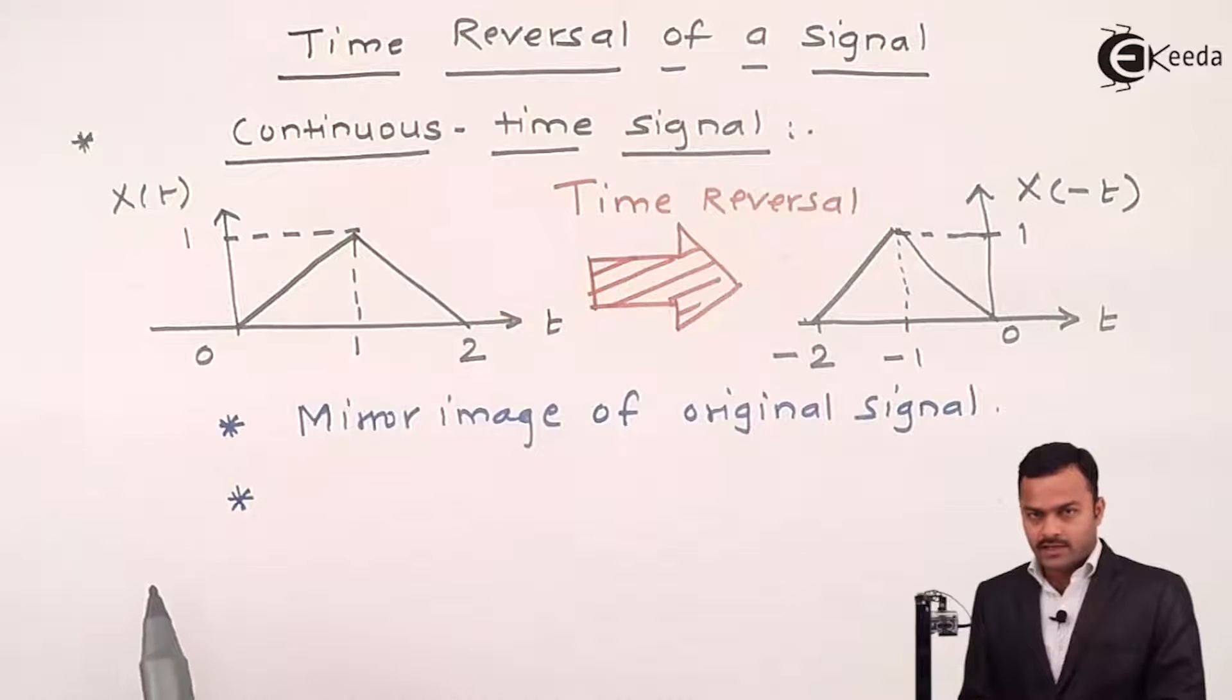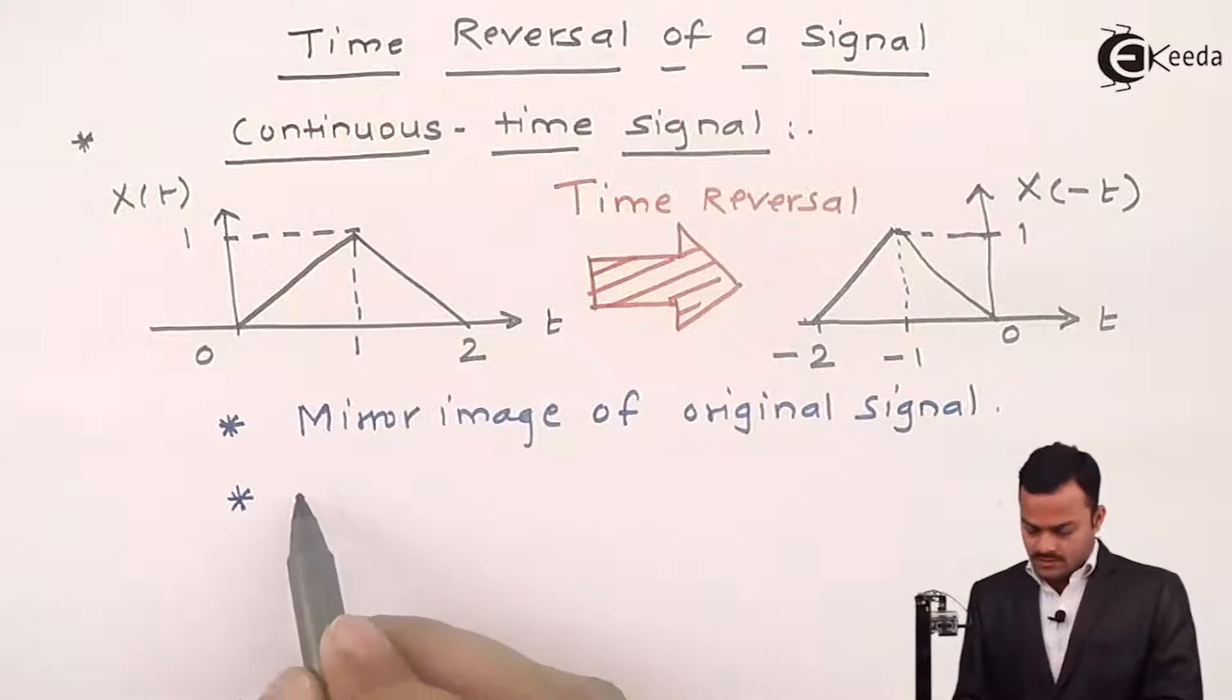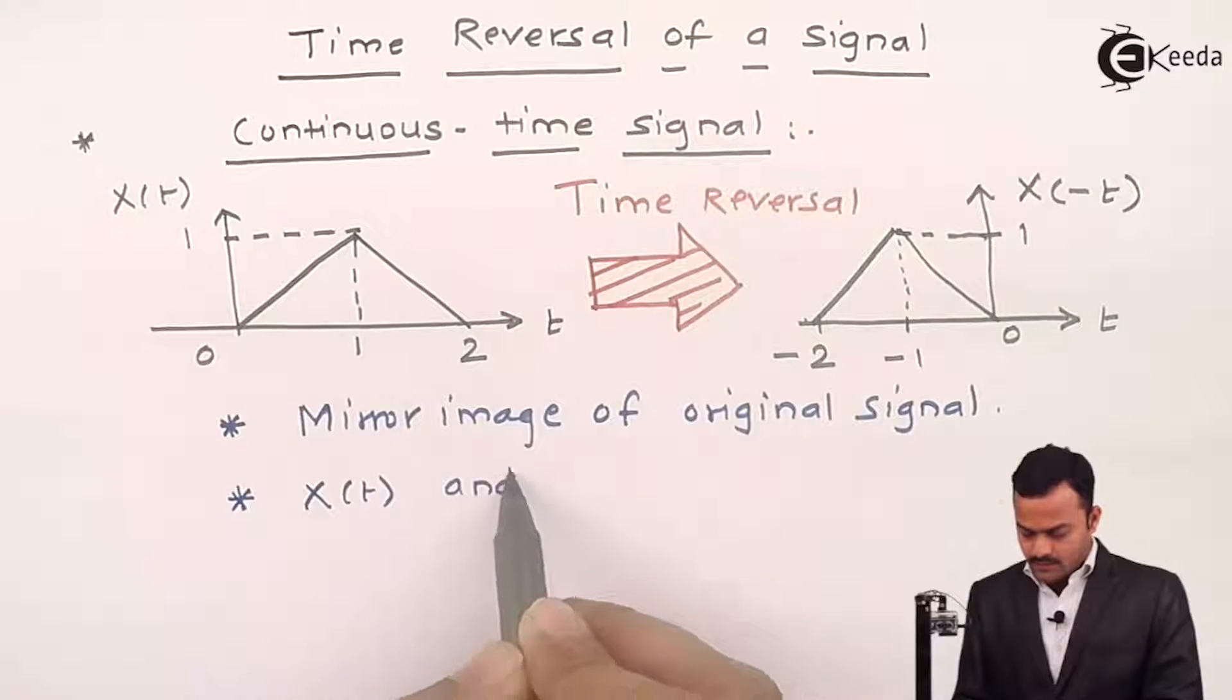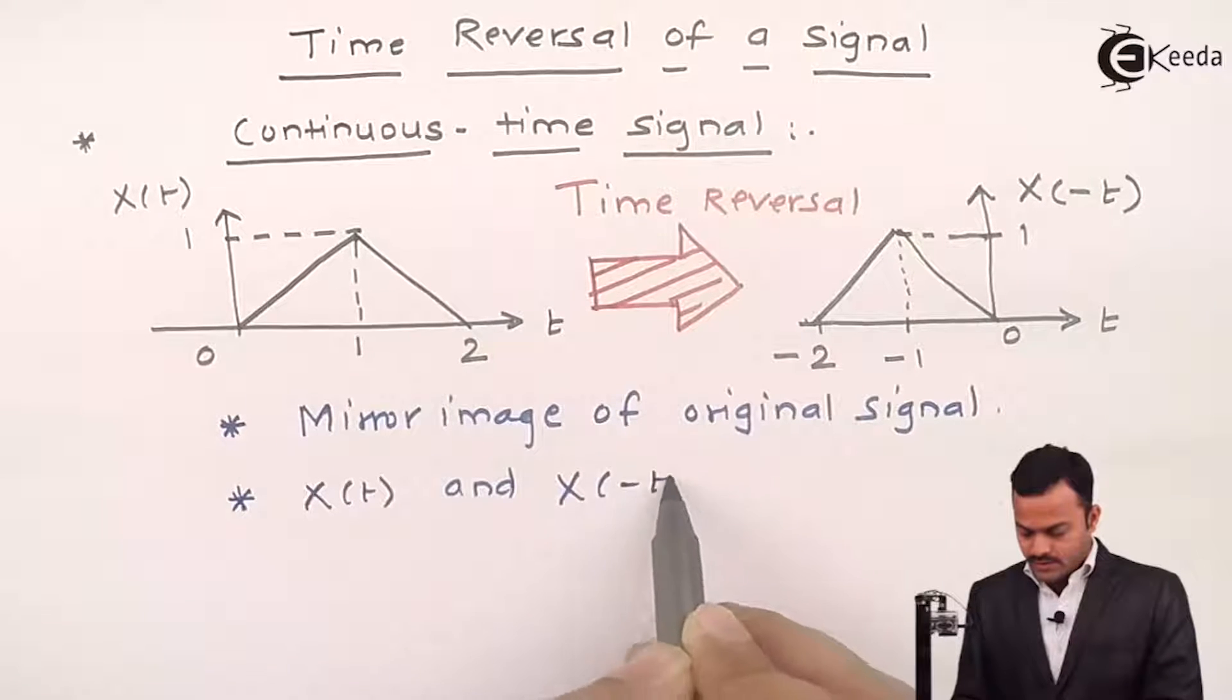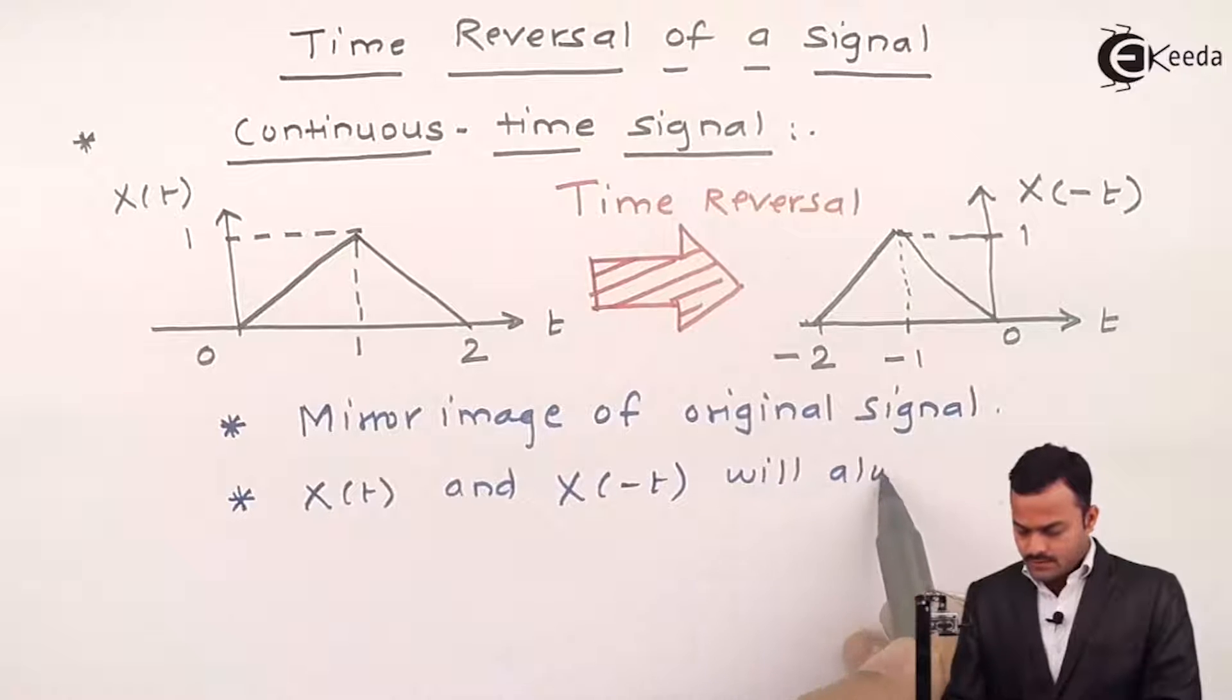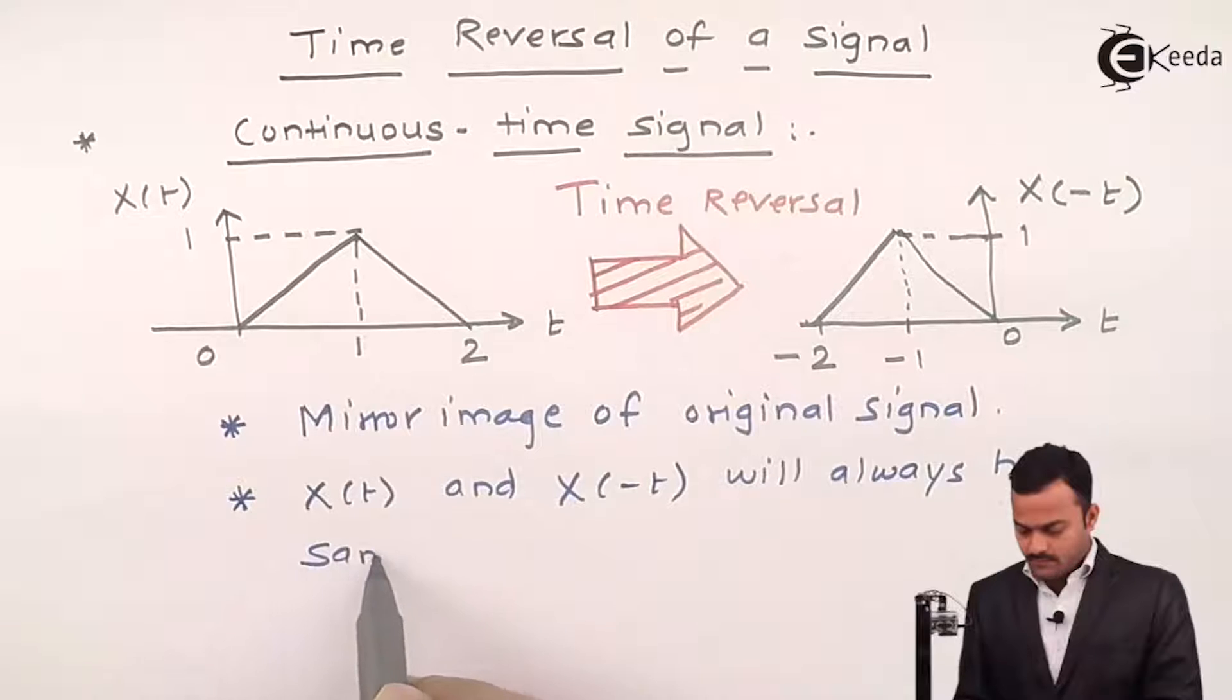So, what we can say over here? In this particular operation of a signal, x of t and x of minus t will always have same magnitude.